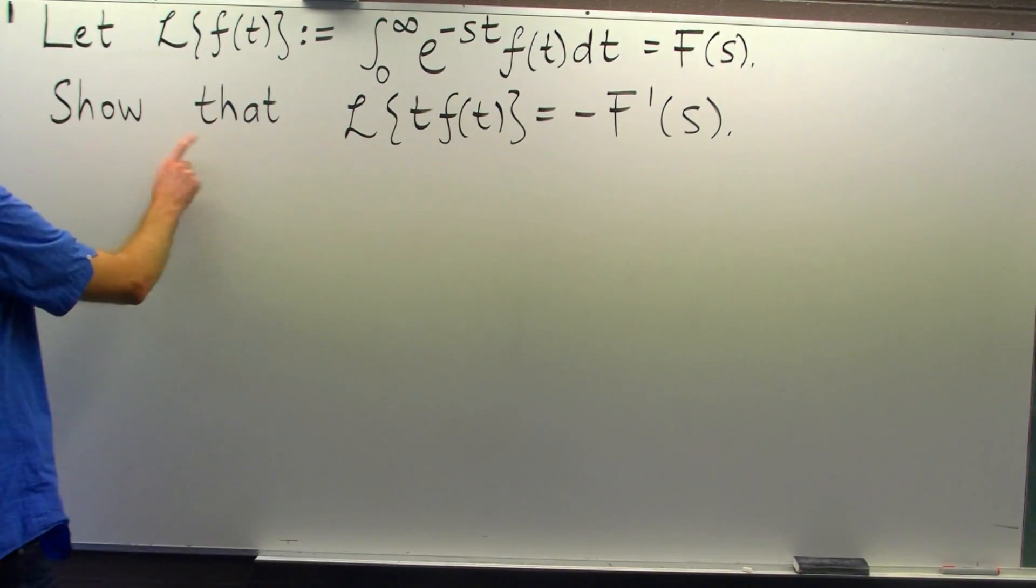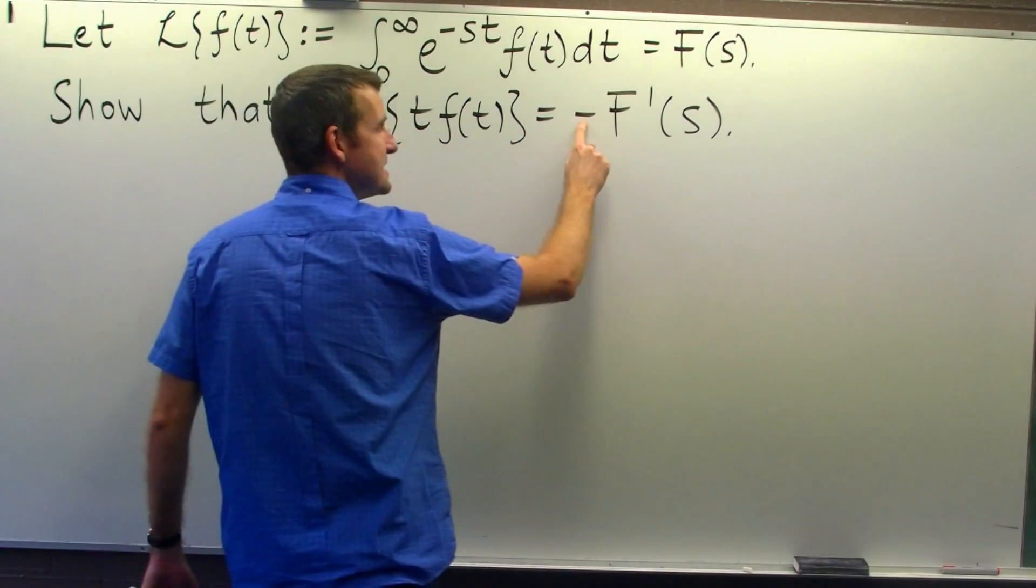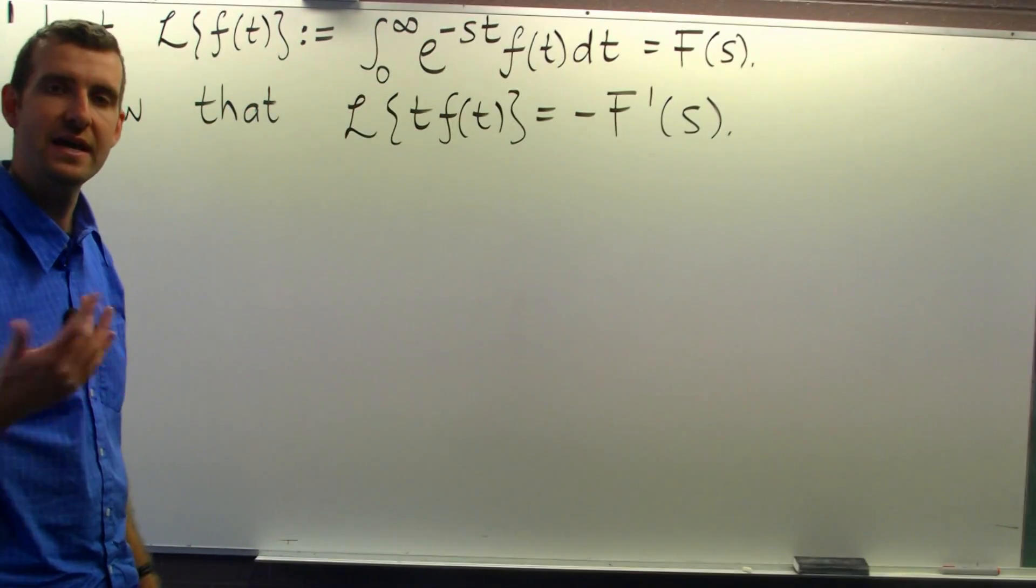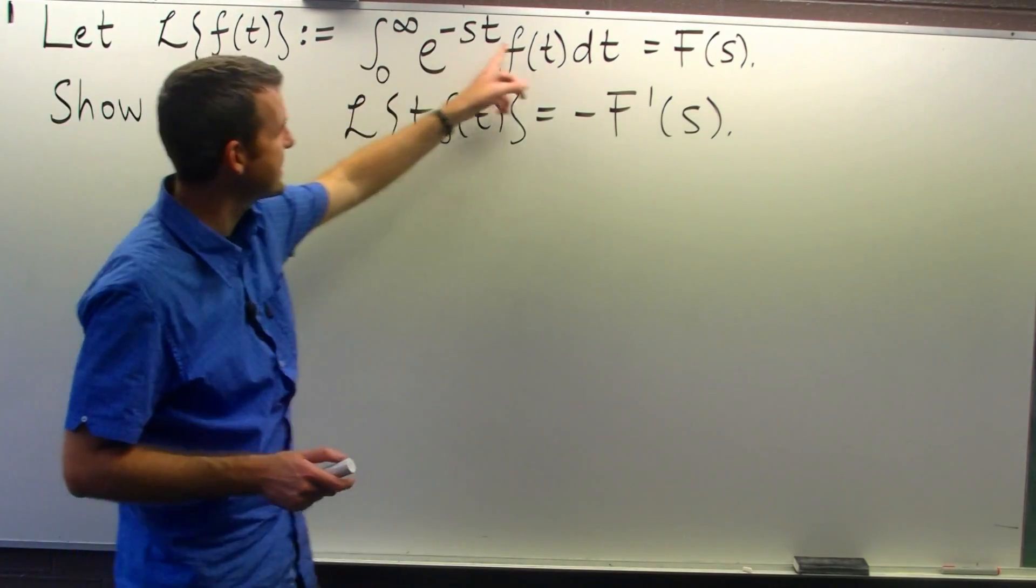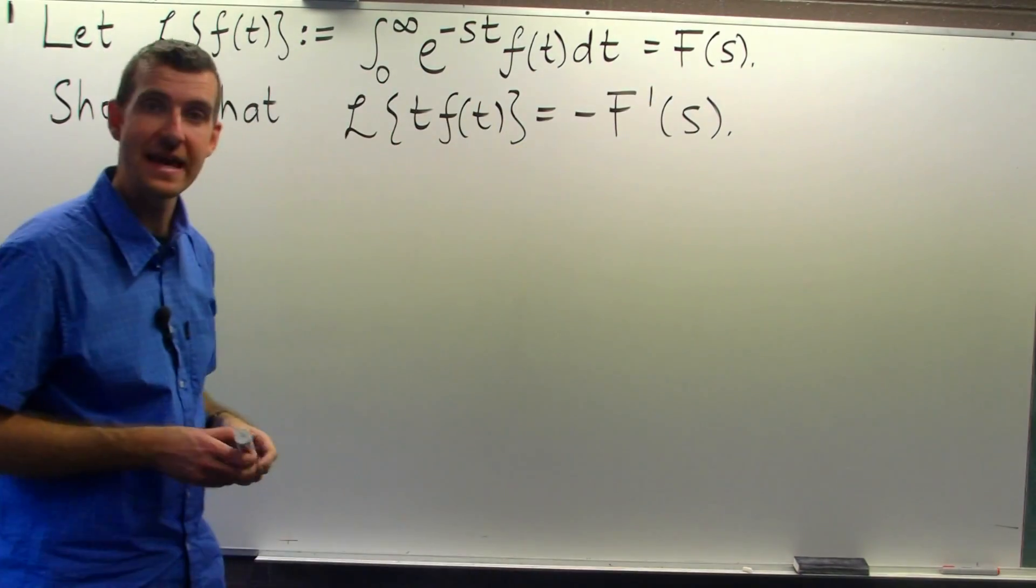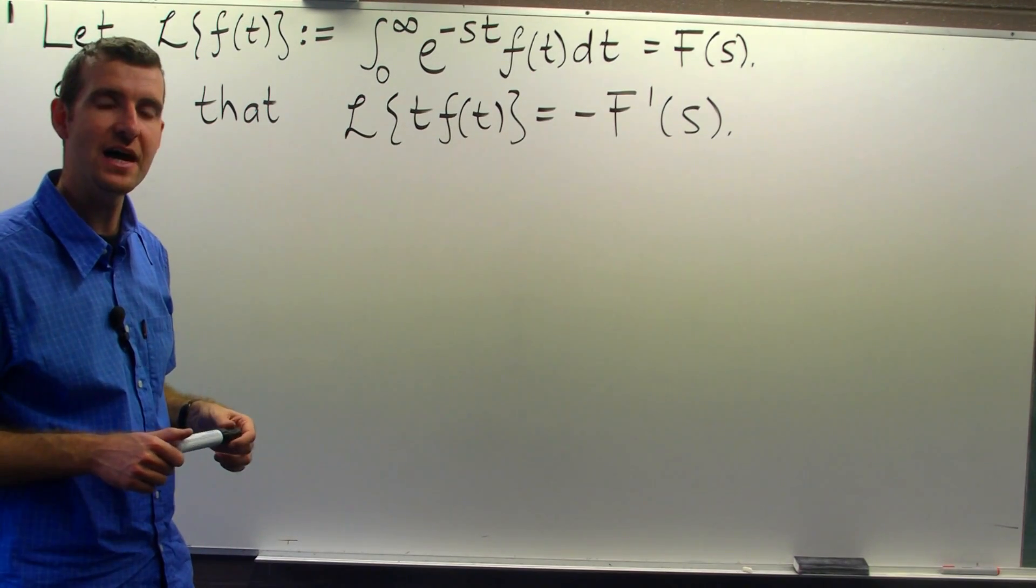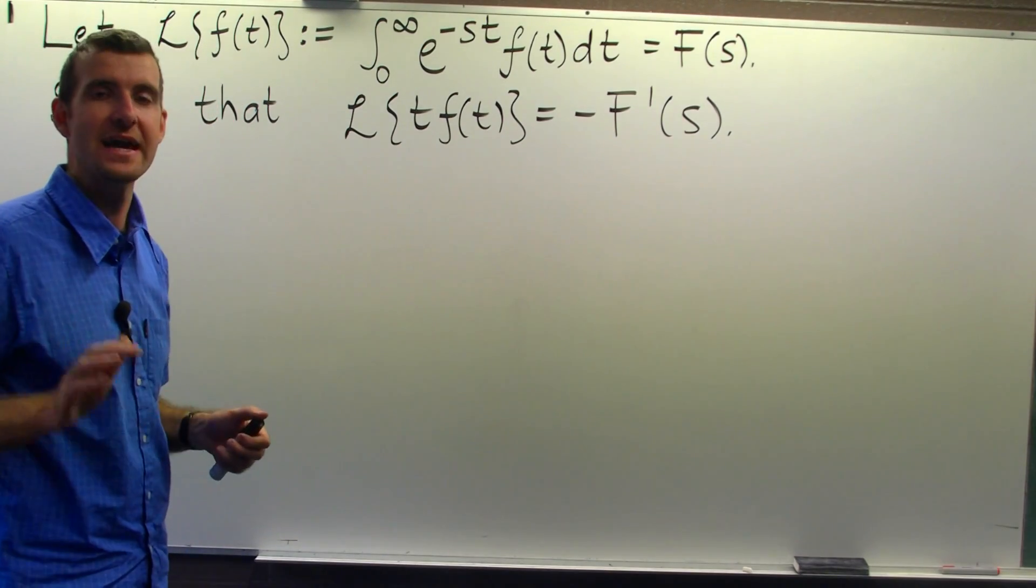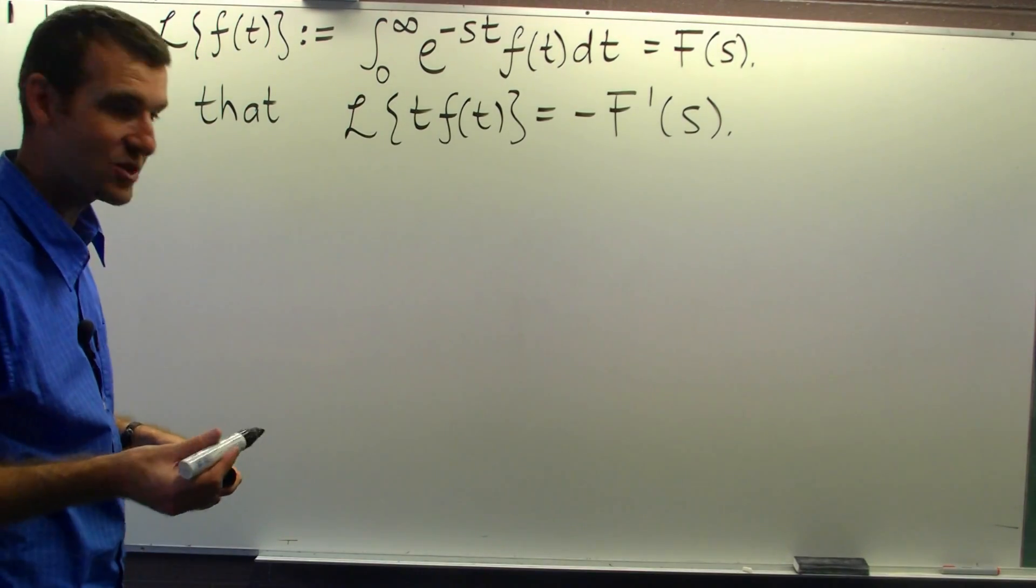We're asked to show that the Laplace transform of t times a function of t is negative big F dash of s. So how do we do that? Well, the basic idea is to take this, differentiate both sides with respect to s, and then rearrange. At the heart of the method is an idea called Leibniz's rule, and Leibniz's rule allows us to differentiate under the integral sign.